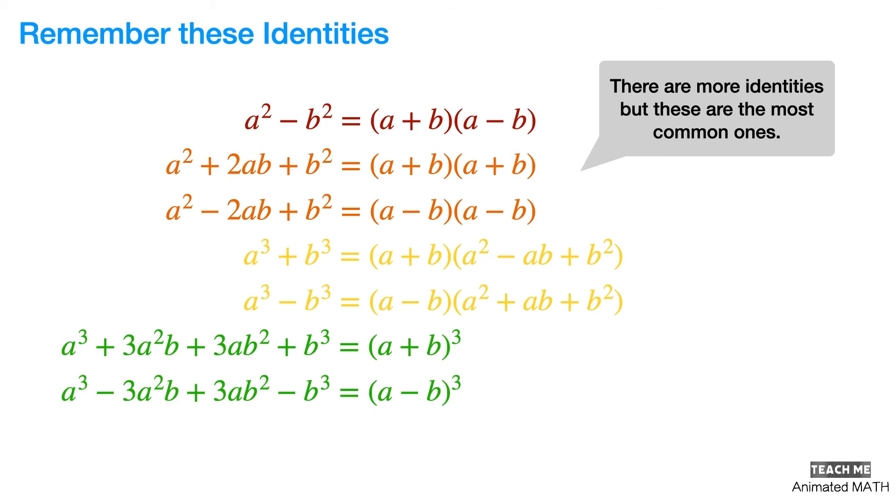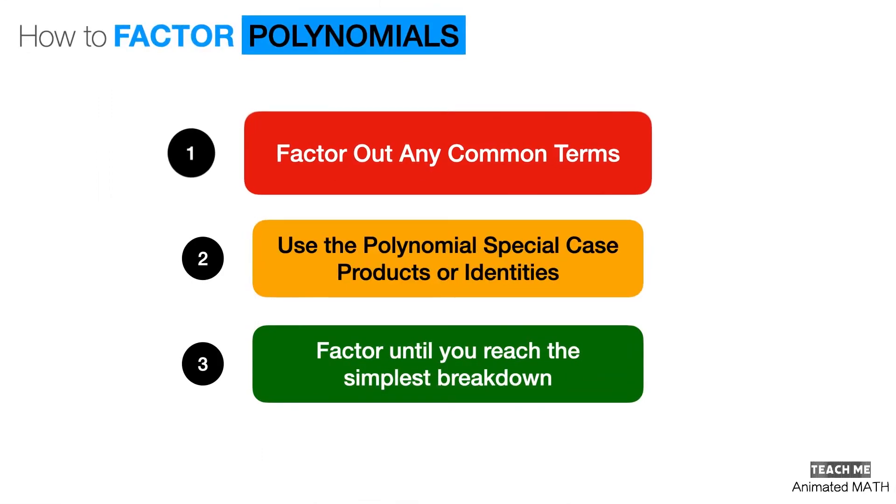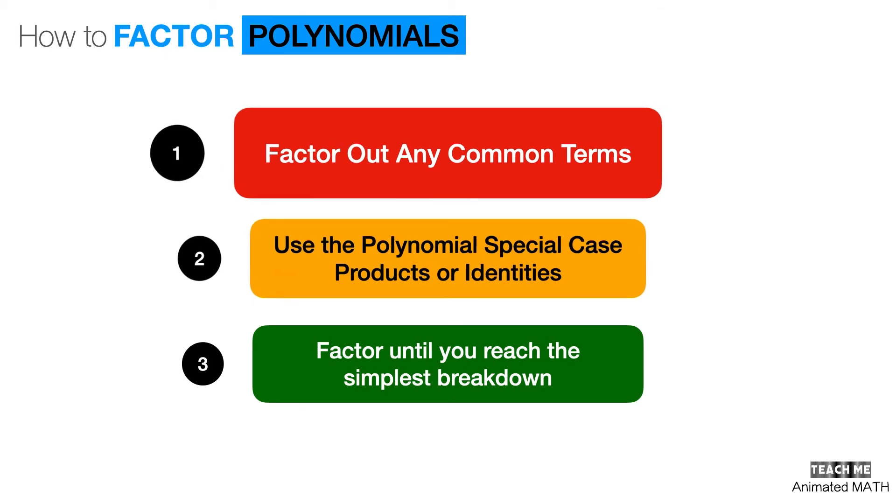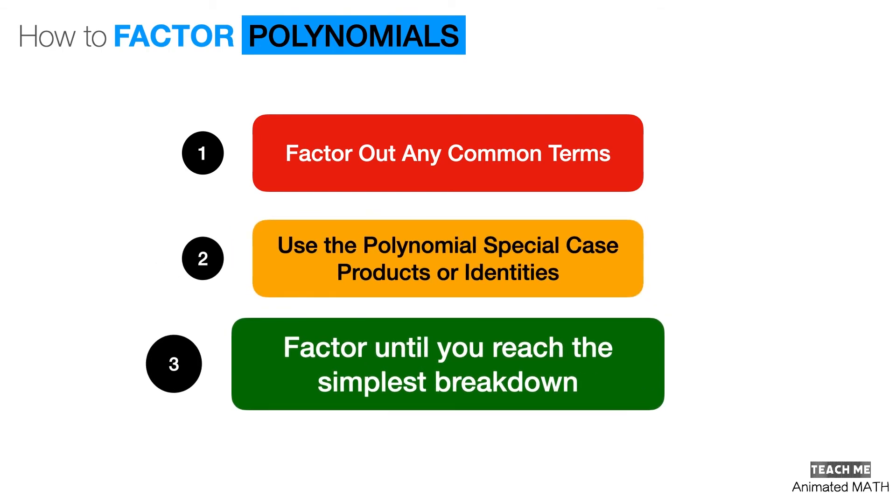To summarize the lessons in this video, here are the basic steps you should follow. First, factor out all the common terms you find. Second, keep an eye on polynomial special case products that might be hiding in plain sight. Third, factor, factor, and factor some more until you can't factor the expression anymore.